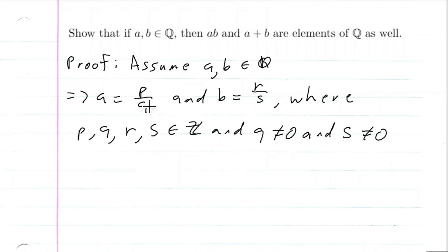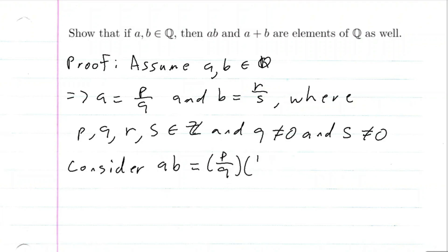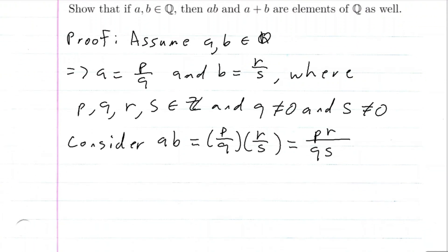So we're going to try to get this form for A times B and A plus B. Let's consider A times B, which would be P over Q times R over S. When we have two fractions, we multiply straight across, so that's going to be PR over QS. We have an integer times an integer, which is an integer, over an integer times an integer, which is an integer. And since Q is not equal to zero and S is not equal to zero, we know that QS won't be zero.